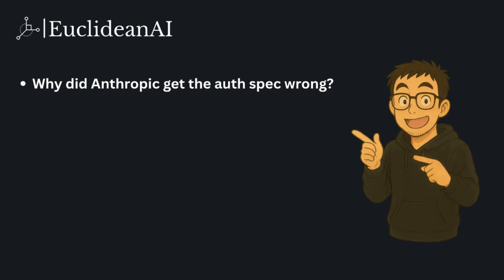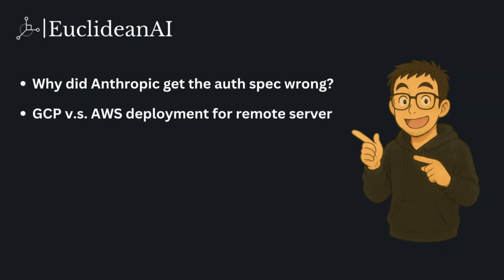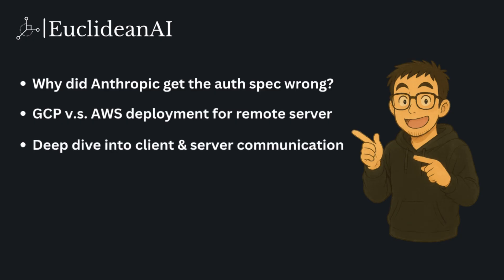Next, I will compare deployment options for remote MCP servers on AWS and GCP. I will walk you through reference architectures for both, highlighting the best practices and common pitfalls. We will zoom in on how clients and servers actually talk to each other in MCP, with a hands-on look at low-level engineering details, plus a quick demo on sampling and proxy servers. Finally, I will introduce you to the latest concept from Anthropic, the MCP Gateway, announced just a couple of weeks ago. We will discuss what it is, why it matters, and how it could change the way you build MCP integrations in the future.